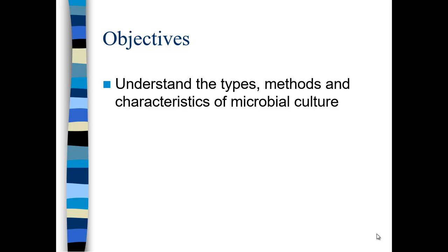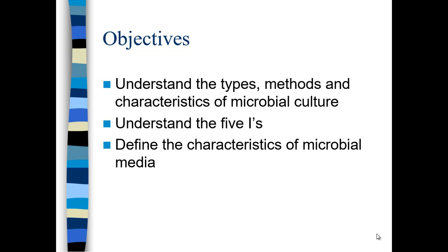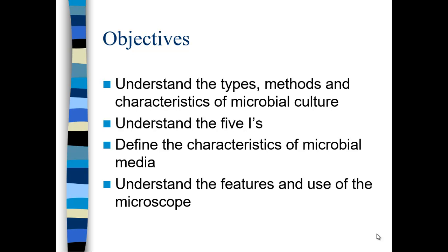Our objectives in this chapter are to look at how we cultivate microorganisms — the types, methods, and characteristics. We'll have the five I's, with an S before them: sample collection, inoculation, incubation, isolation, inspection, and identification. We also want to talk about the characteristics of microbial media. And we want to get very comfortable with the microscope, all facets of it. When we observe bacteria and archaea under the microscope, we use the highest level of power — 1,000x for the scopes in the laboratory.